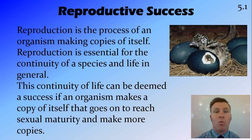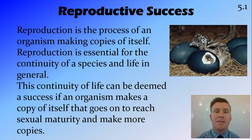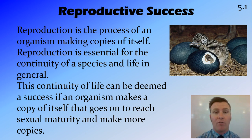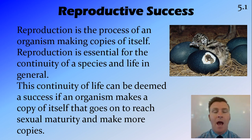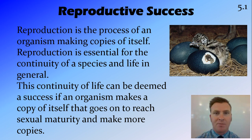Reproduction is what ensures the continuity of life, or the continuity of a species on a smaller level. It's a process by which a parent is able to produce an offspring and therefore continue the species. This process is deemed a success if a parent can produce an offspring and that offspring can survive until sexual maturity to reproduce and create another offspring.